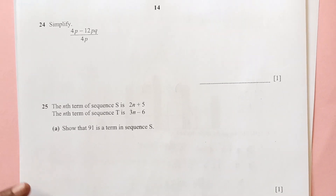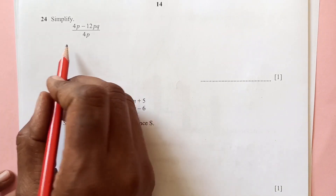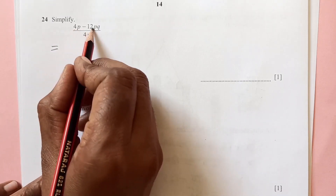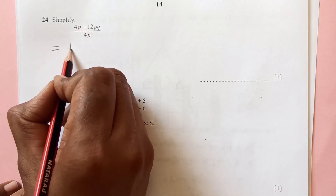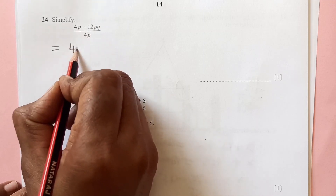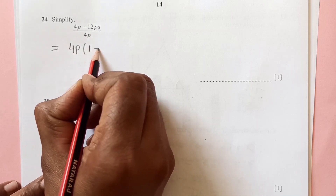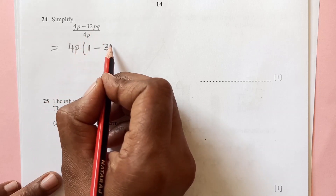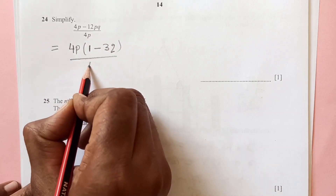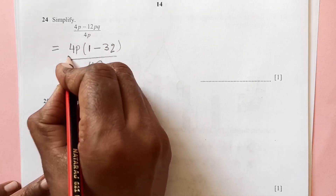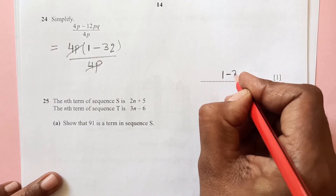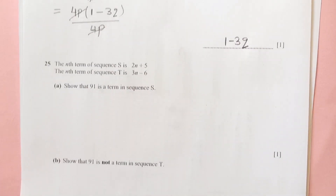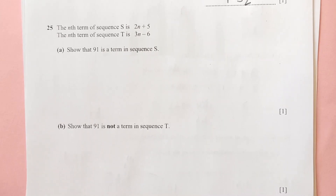Number 24: simplify the expression. First, 4 is a common factor. We get 4p times (1 minus 4 times 3q) over 4p. The 4p cancels, so the answer is 1 minus 3q.